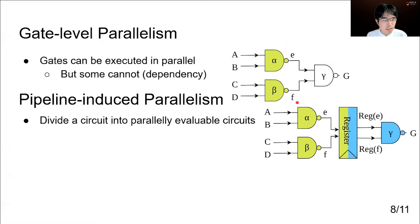The pipeline is a circuit design technique that increases the parallelly evaluable gates by inserting registers to divide the circuit into multiple parallelly evaluable circuits. If we assume we are currently evaluating a stream of data by the same circuit, in a pipeline situation, gamma does not have to wait for the results of alpha and beta because the previous results are supplied from the register.